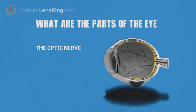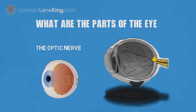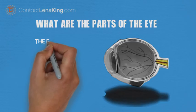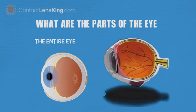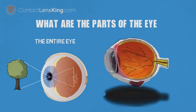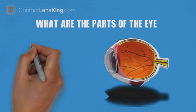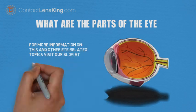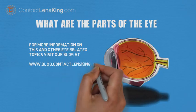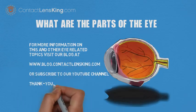The optic nerve is bundled at the back surface of the eye. Electrical nerve impulses travel along the optic nerve and onward to the brain. With a better understanding of the eye and its structures, one can appreciate its true complexity. For more information on this and other eye-related topics, visit our blog at blog.contactlensking.com or subscribe to our YouTube channel. Thank you.